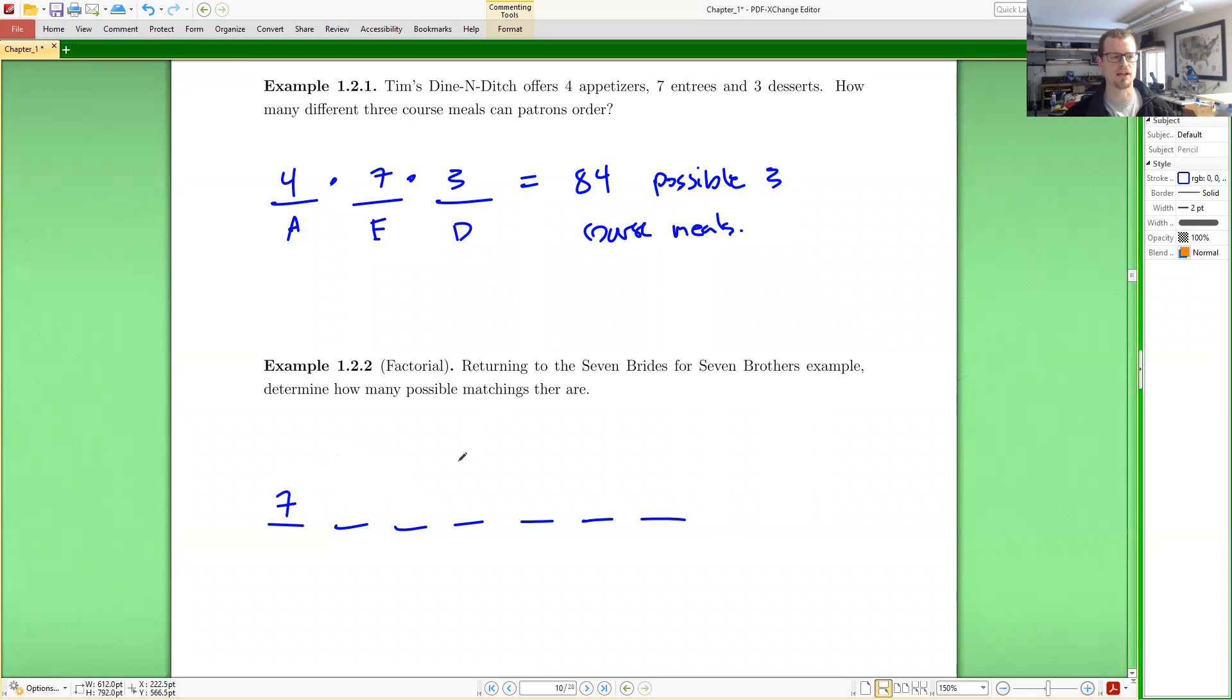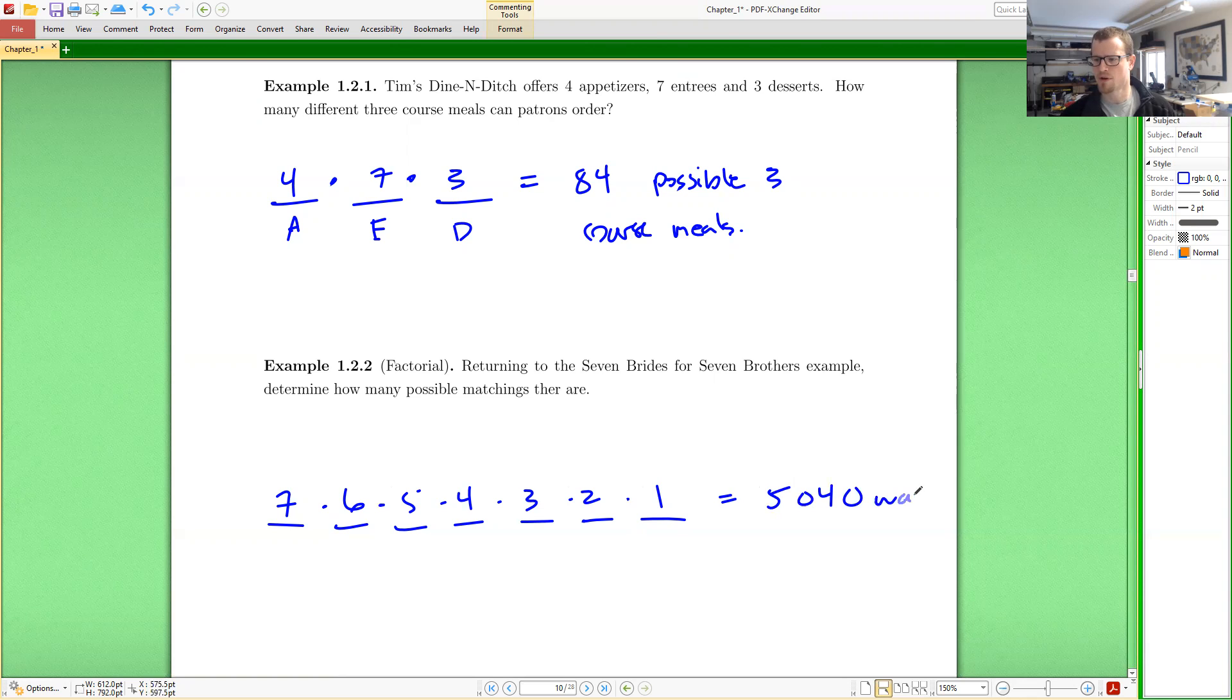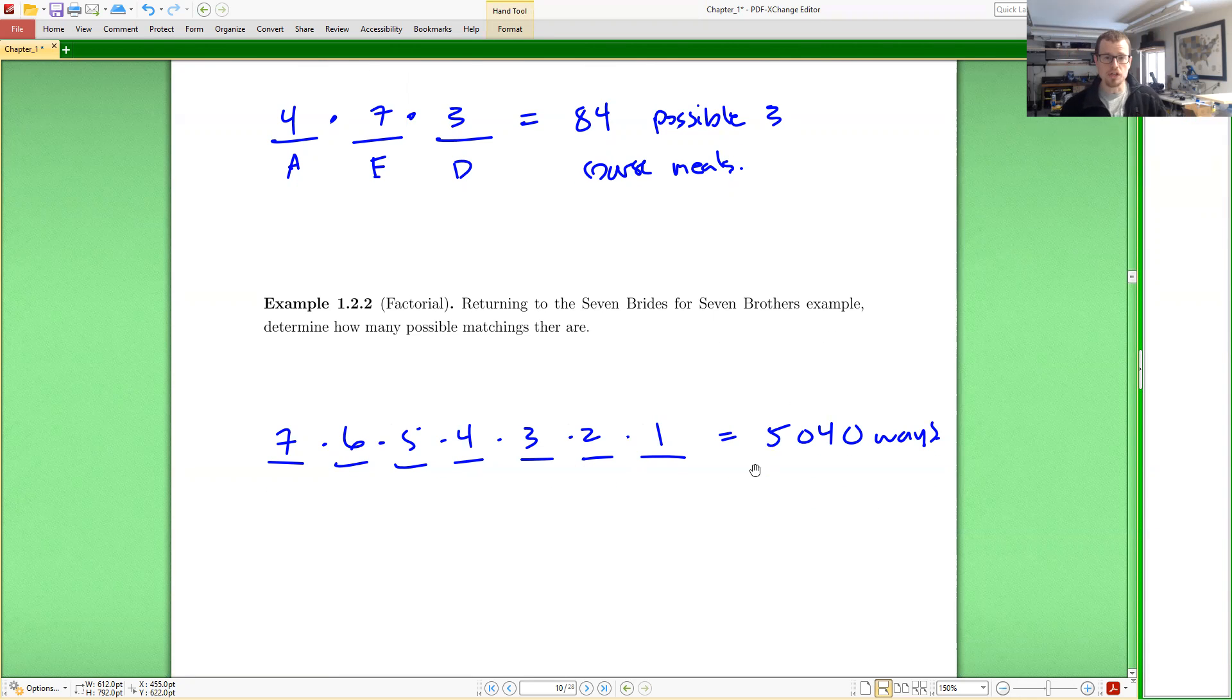So at first, there are seven different names that I could write down because there are seven brothers. After I've chosen one, I can choose the next one. But there's only six to choose from, then there's only five to choose from, then four, then three, then two, then one. I can't repeat brothers names. They're only marrying one bride. So we have seven options and six and five and four, then three, then two, then one. And I multiply each of these numbers together to find this to be 5,040 ways that I could match the brides with the brothers. So we did that with just using the multiplication principle.